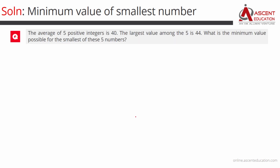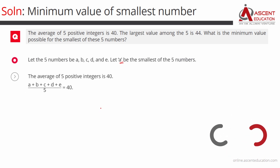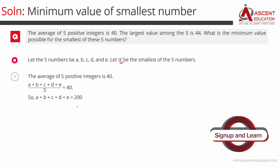5 numbers A, B, C, D, E — let's make A the smallest. The average of the 5 numbers is 40, so A plus B plus C plus D plus E divided by 5 is equal to 40. Cross-multiplying, the sum of these 5 numbers is equal to 200.